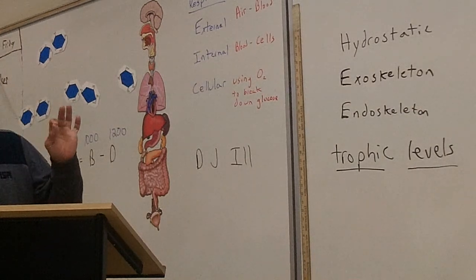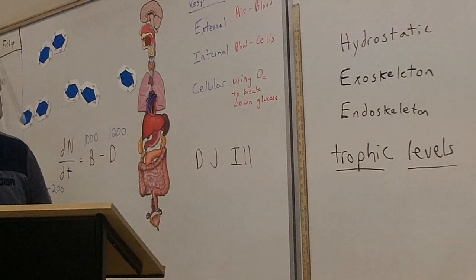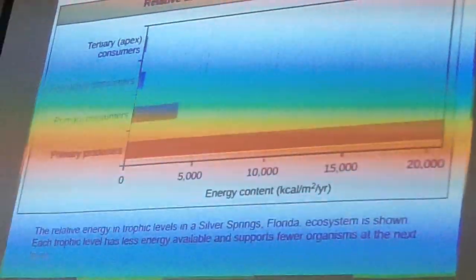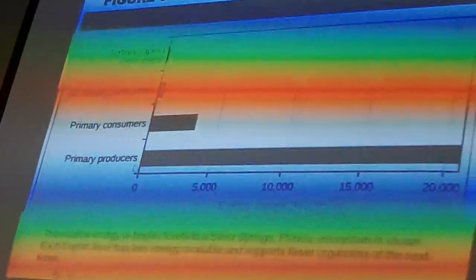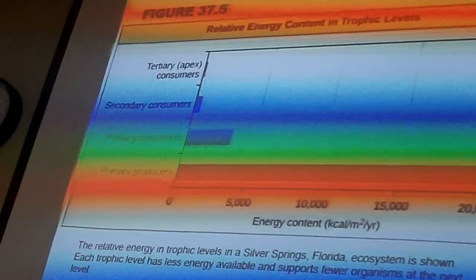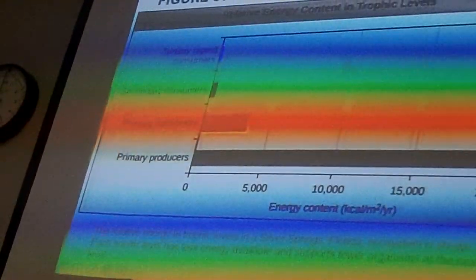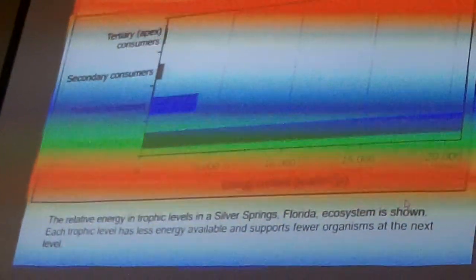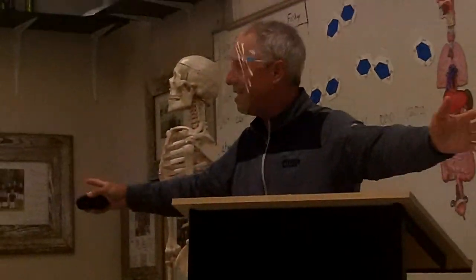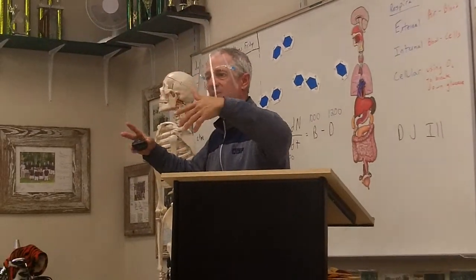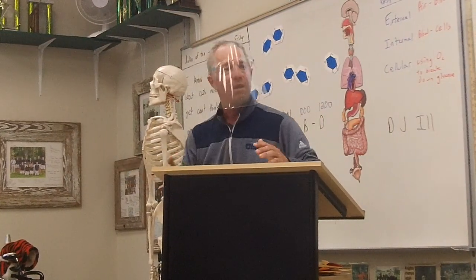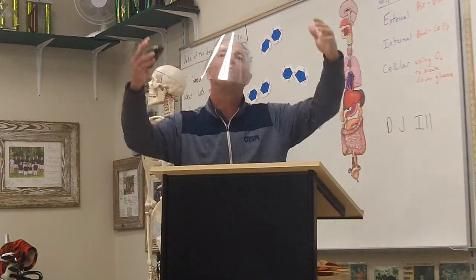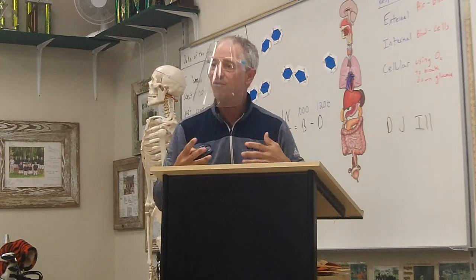So as we go up in trophic levels, we start with the primary producers. This is a graph showing how much energy content there is at the different trophic levels. And you can see the primary producers have a huge amount of energy in them. There's always a lot of your producers around. If you look, just look around, plants are producers. So look around at all the plants. Isn't there a lot of them out there? You look out the window, you see a lot more plants than animals, right? There's always a high energy content in the producers because they're the ones starting, making the food, getting the energy from the sun.